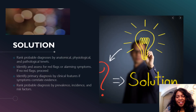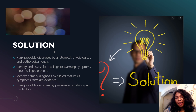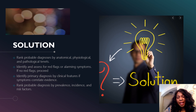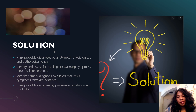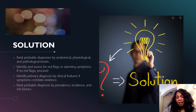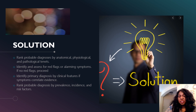You have arrived at the solution. Here you're going to rank your probable diagnosis by anatomical disposition, physiological disposition, and pathological tenets of disposition. You still need to identify and assess for red flags or alarming symptoms. A red flag would be lower extremity swelling or chest pain. It's really important when differentiating diagnosis that you rule out red flags or atypical symptoms, ensuring the patient has hallmark symptomatology versus an atypical presentation.